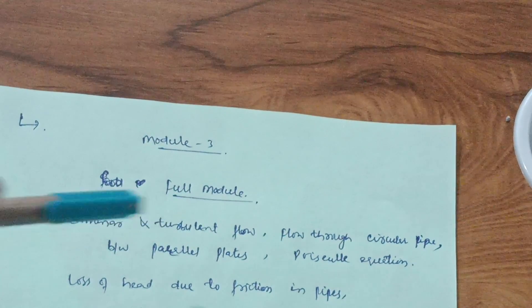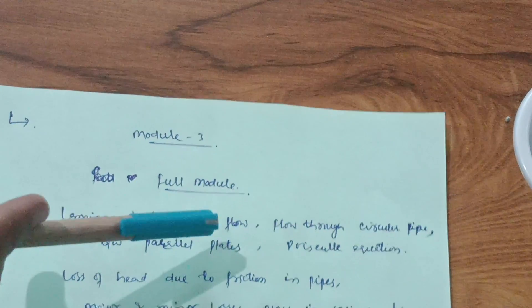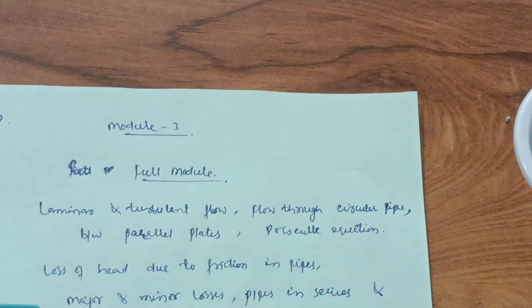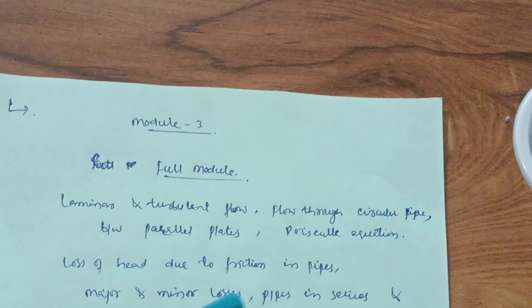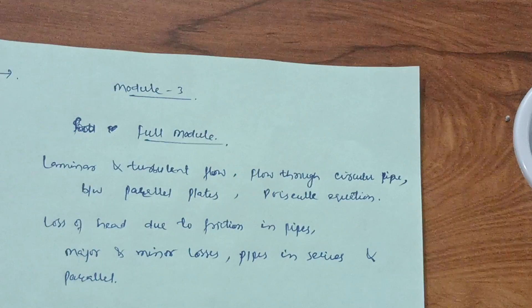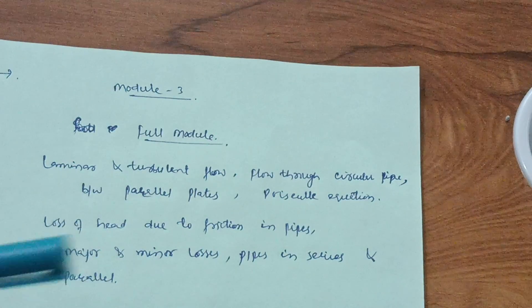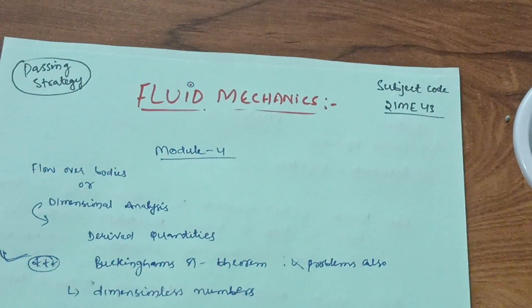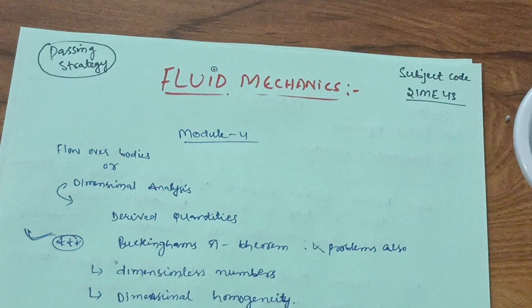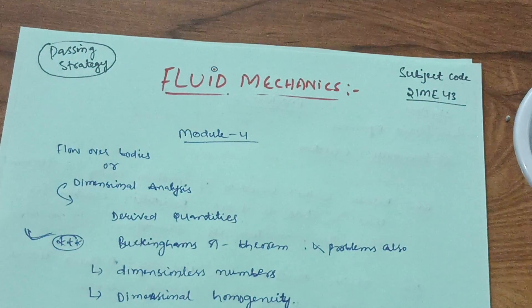Module 3 has less syllabus, so focus fully on laminar and turbulent flow, flow through circular pipes, flow between parallel plates, the Poiseuille equation, and loss of head due to friction in pipes — including major and minor losses, pipes in series and parallel. Focusing on these topics will help you conquer this subject. This much content is enough to score well. Thank you for watching.